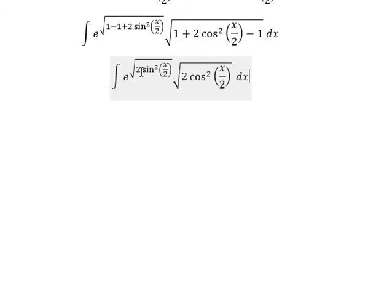Next, we put the square root of 2 and the square root of sine x over 2, similar for cosine x over 2. And now we got the square root of 2 multiplied with the integral of e to the power of the square root of 2 multiplied with sine x over 2, and we have cosine x over 2.